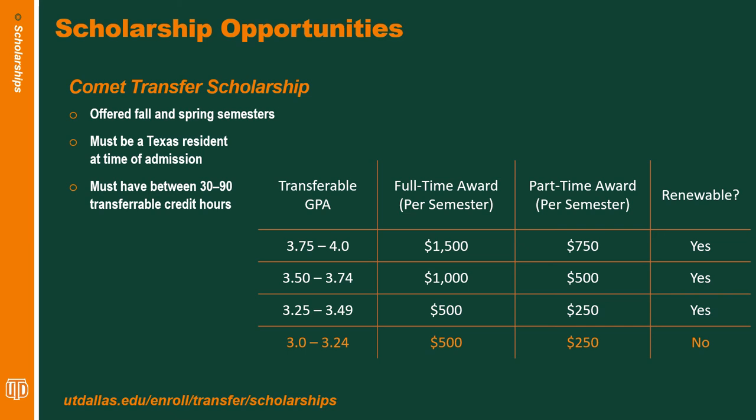One of the scholarships I'd like to talk about today is the Comet Transfer Scholarship. This is offered for the fall and spring semesters for Texas residents who have between 30 and 90 transferable credit hours and a GPA falling between 3.0 and 4.0. This award is issued automatically, so there's no additional application process for applicants, and the award will be issued depending on where your GPA falls on the scale.